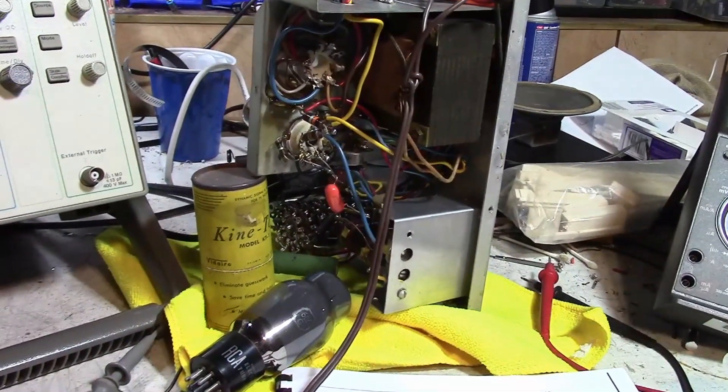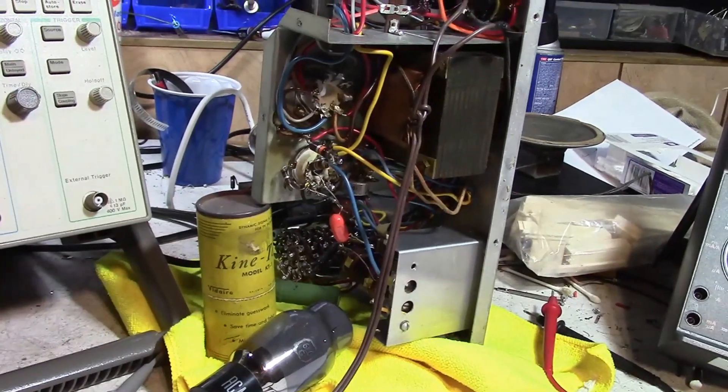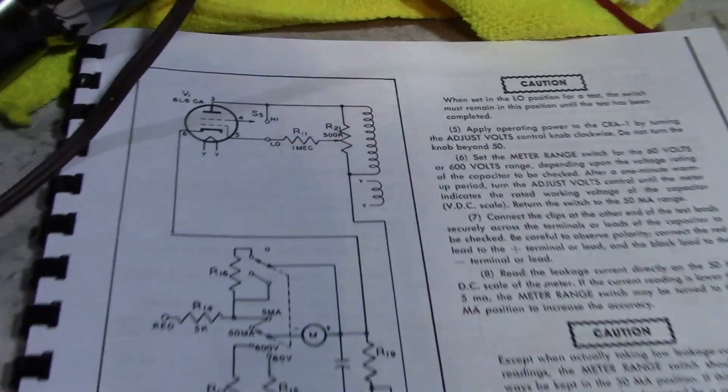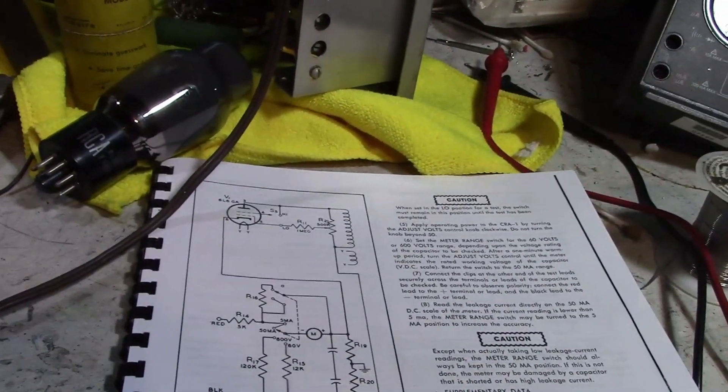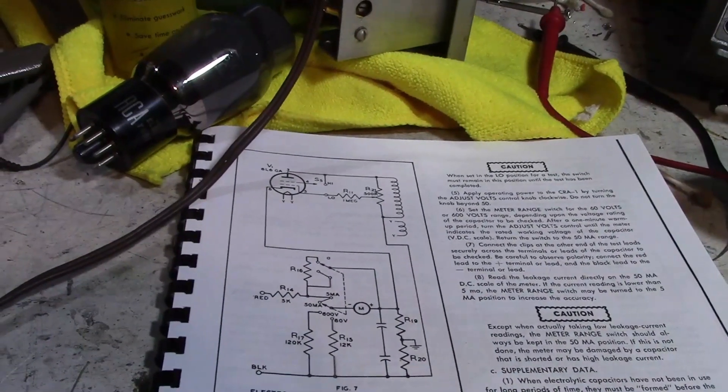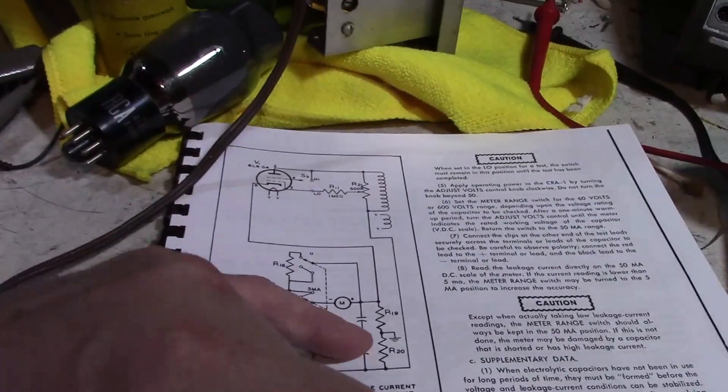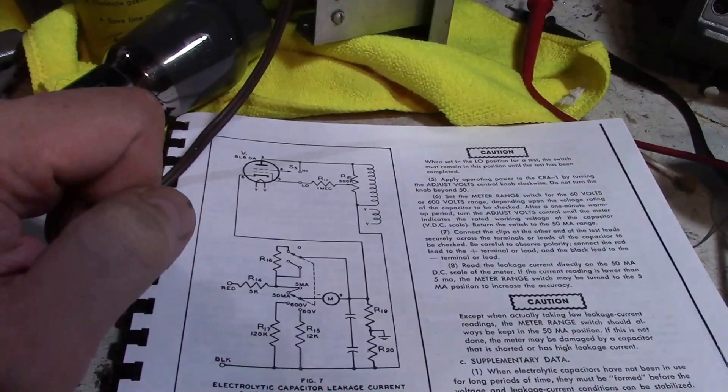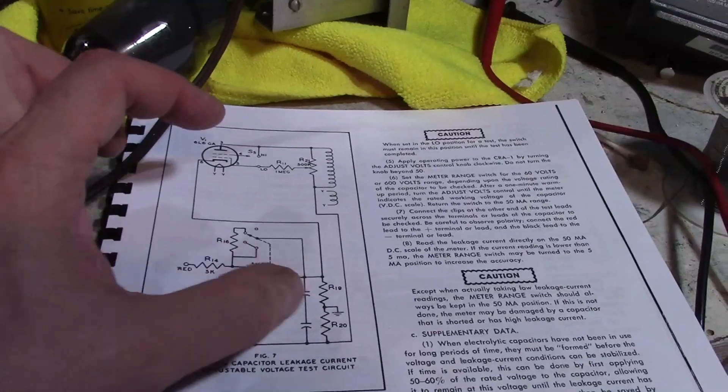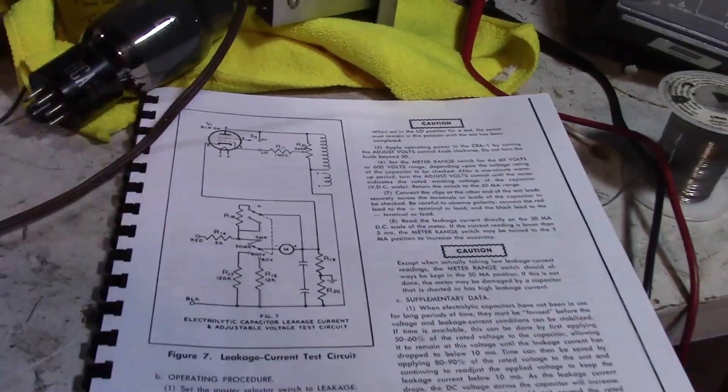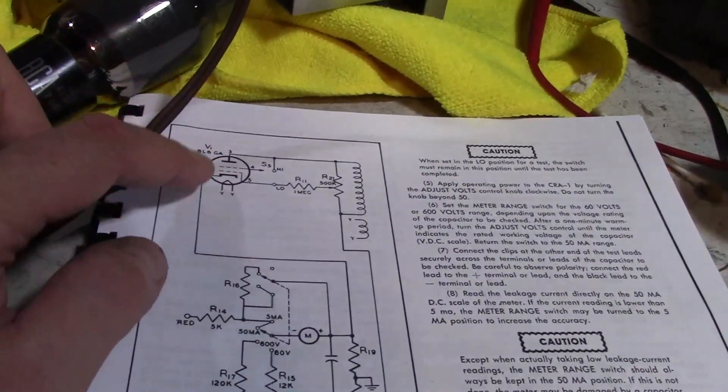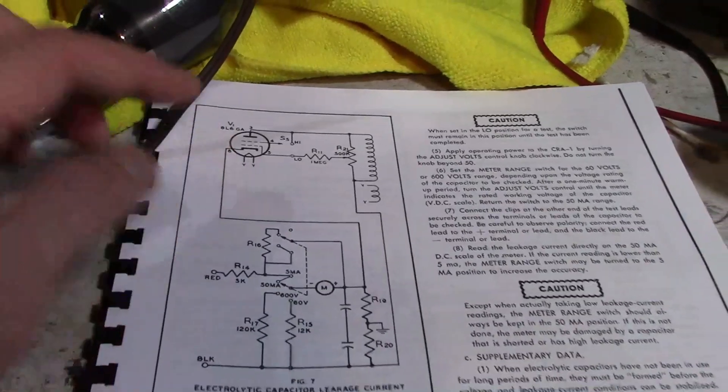But I do appreciate all the brain power and effort you guys have put into this. It's an incredibly basic circuit, but it's kind of interesting. I mean, it's weird the way it works. I've tried some other voltage measurements like between ground and the grid, ground and the cathode, and it's weird because the voltage between ground and the grid doesn't change a whole lot.